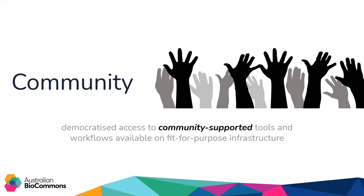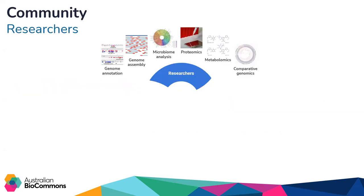So who are these communities? Our communities can be split into three broad groups. The first is the researchers. Typically we will create researcher communities of practice for domains like proteomics or for a specific end goal — things like genome assembly or genome annotation.